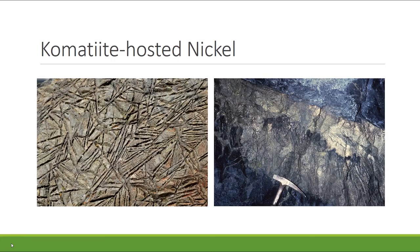Magmatic differentiation can also occur in lava flows and led to the formation of komatiite-hosted nickel deposits in Western Australia. Komatiites are a unique group of magnesium-rich rocks that formed from high-temperature ultramafic lavas during the Archean, when the mantle and crustal geothermal gradients were much higher than they are today. Komatiites are dominated by olivine and pyroxene and form a characteristic spinifex texture, as seen in the image on the left. The photograph on the right shows a thick band of nickel sulfide at the base of an altered komatiite.